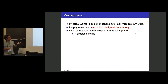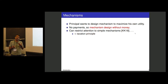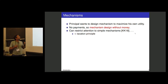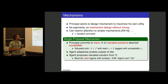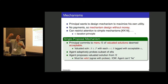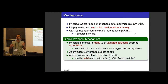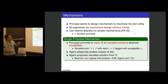Our principal wants to design a mechanism to maximize his own utility. I'll assume no payments — this is mechanism design without money. As observed by Kleinberg and Kleinberg in a closely related model, by taxation principle arguments this reduces to a very simple style of mechanism: single proposal mechanisms. The principal's mechanism is simply a menu of solutions they're willing to accept — acceptable solutions tagged with required utilities for each element.